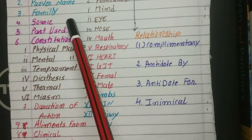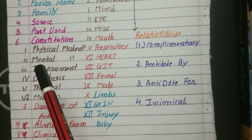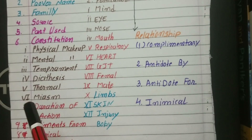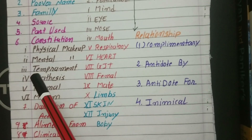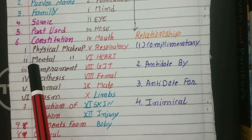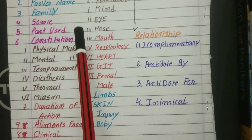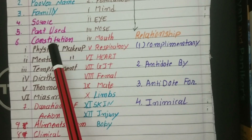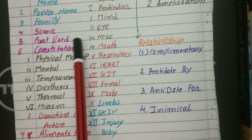The fourth thing is the source — which kingdom the drug comes from, like the vegetable kingdom, animal kingdom, or mineral kingdom, including chemicals and other sources. You have to write which kingdom is the source of the drug. Then you will write the part used.